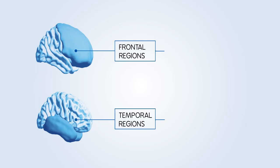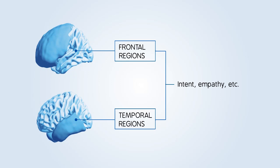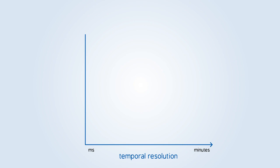We know that these processes activate different frontal and temporal regions, which support our inferences of others' mental states, including intent, empathy and other aspects of moral cognition.